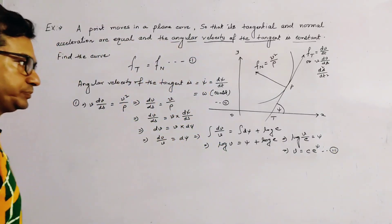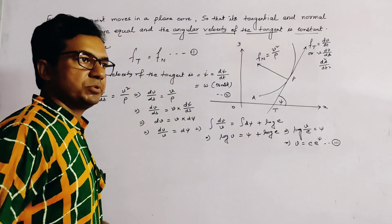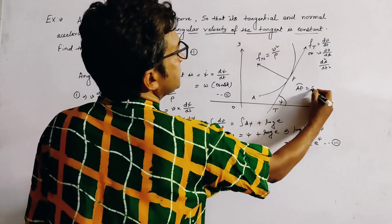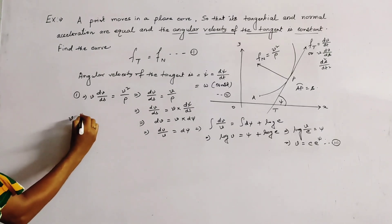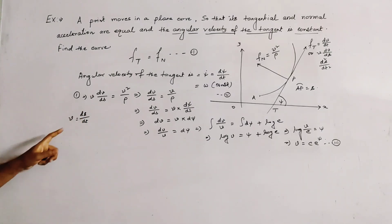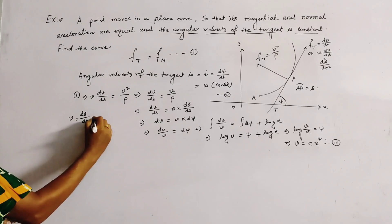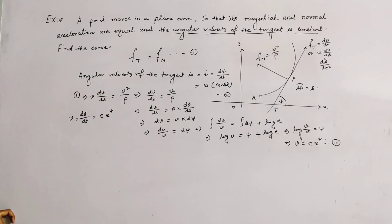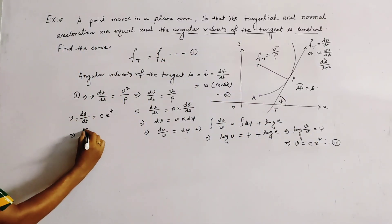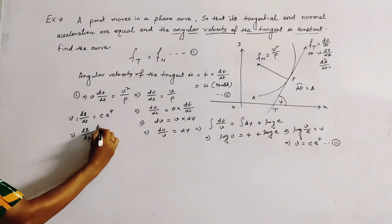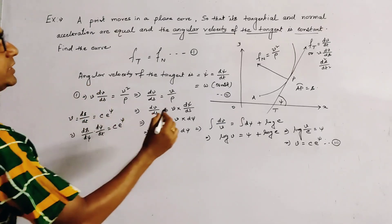Now let A be the initial point on the curve, and let the arc length from A to P be s. We write v = ds/dt as the expression for velocity. From (3), v = ds/dt = c·e^ψ.